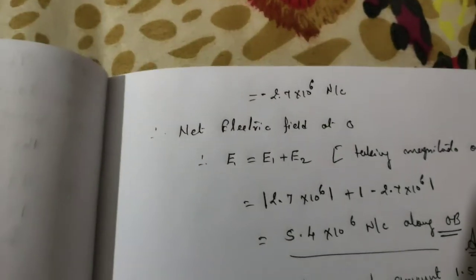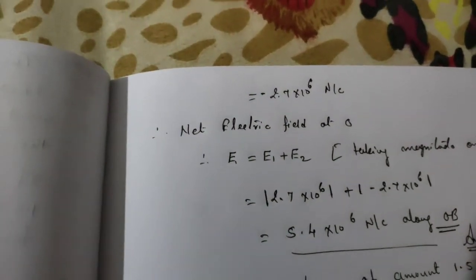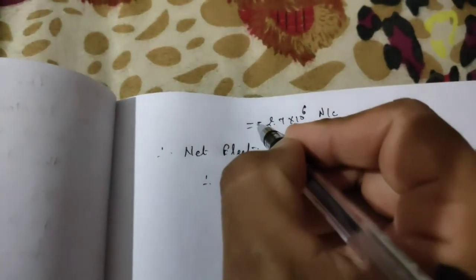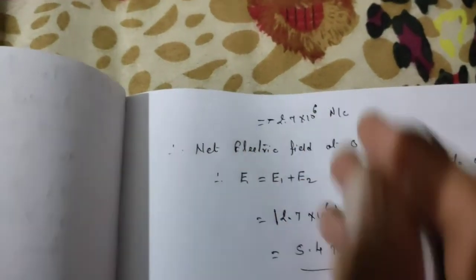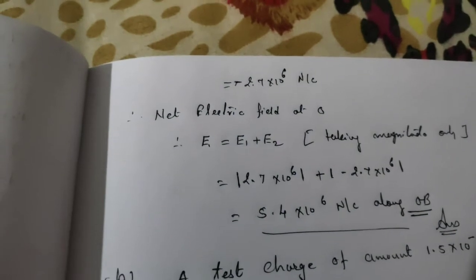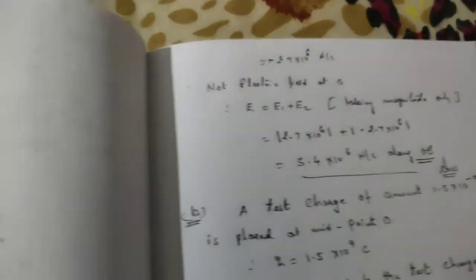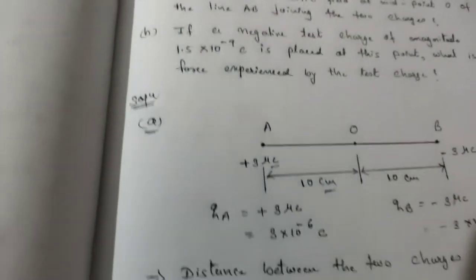The answer is 2.7 × 10⁶ Newton per coulomb along OB direction. Since the magnitude of this charge is negative, we consider the negative charge particle.